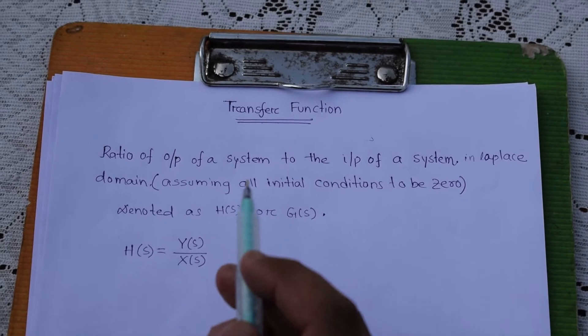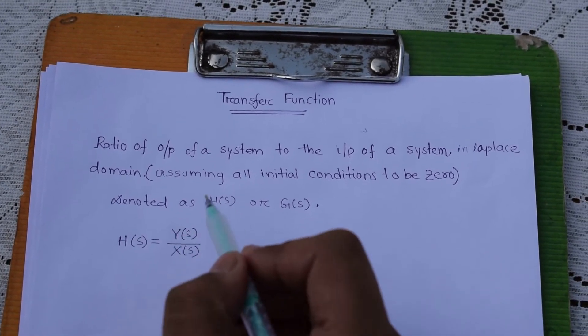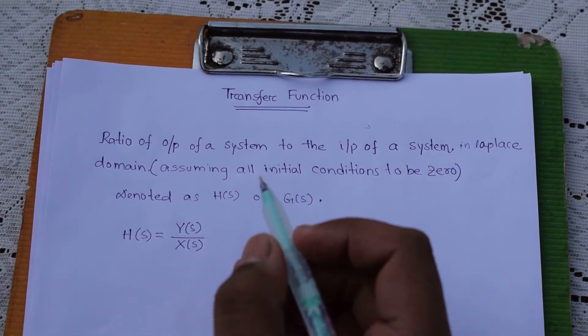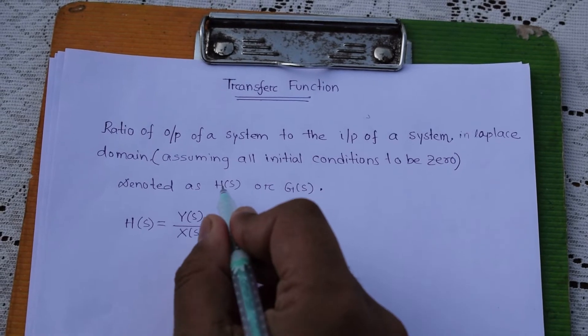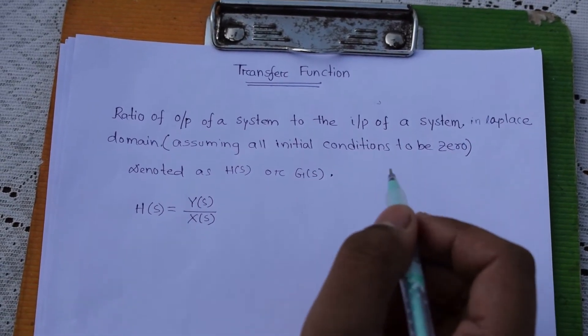In Laplace domain we cannot do it in time domain. Here we have to assume all our initial conditions to be zero. The transfer function is denoted as H(S) or G(S). H(S) is the closed-loop transfer function and G(S) is our open-loop transfer function, which we will discuss in upcoming videos.